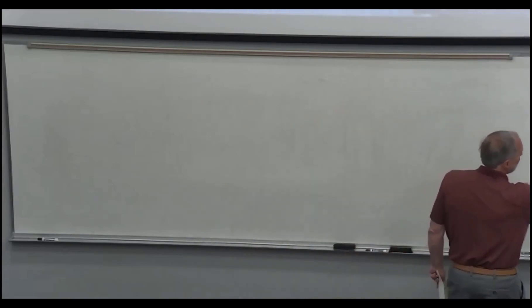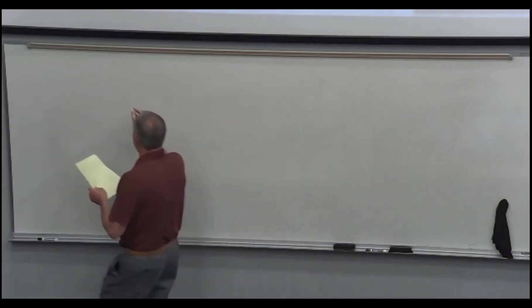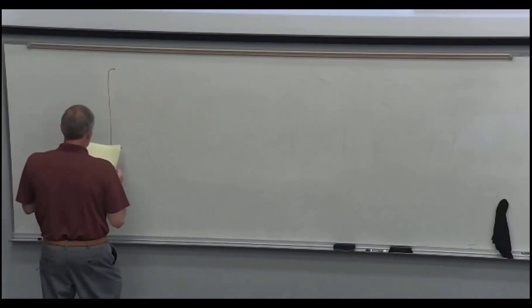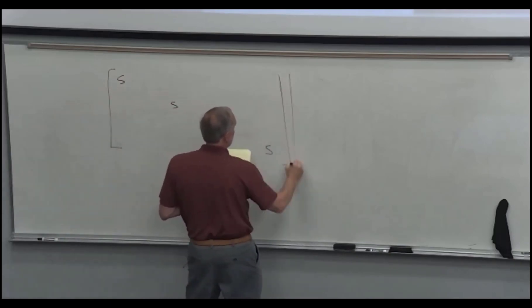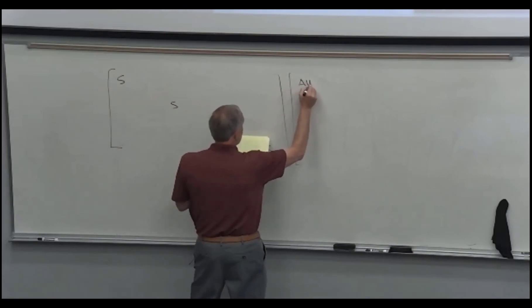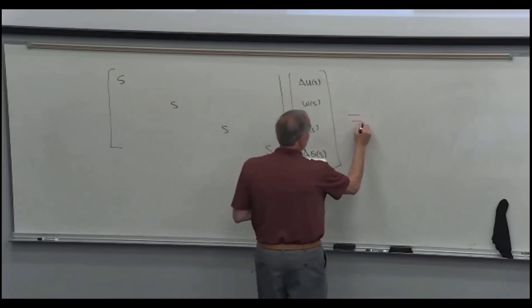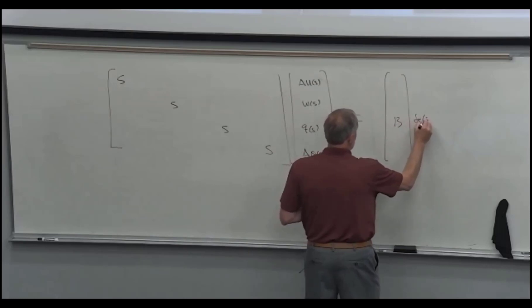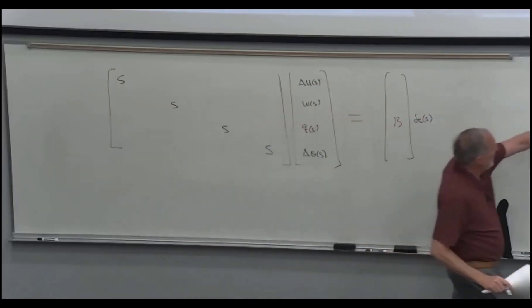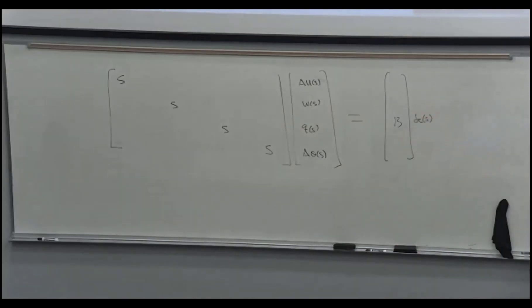If we move the A times the vector over to this side and write it as a matrix, we're going to get S's along the diagonal because those multiply each of the state vectors. So I kept this, we got S times each one of those things in its spot.